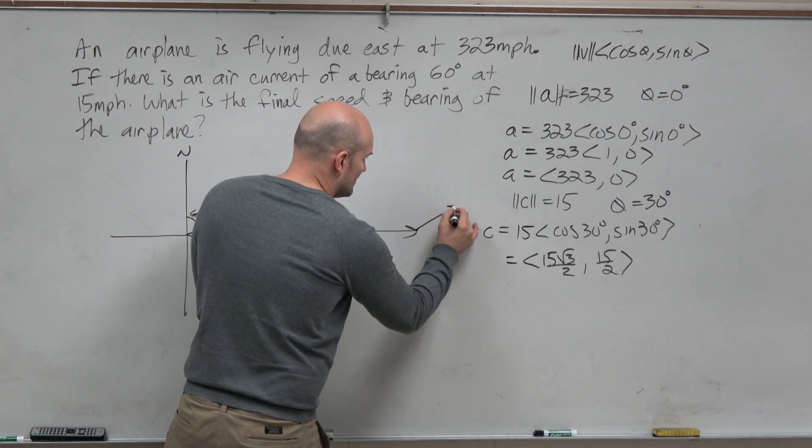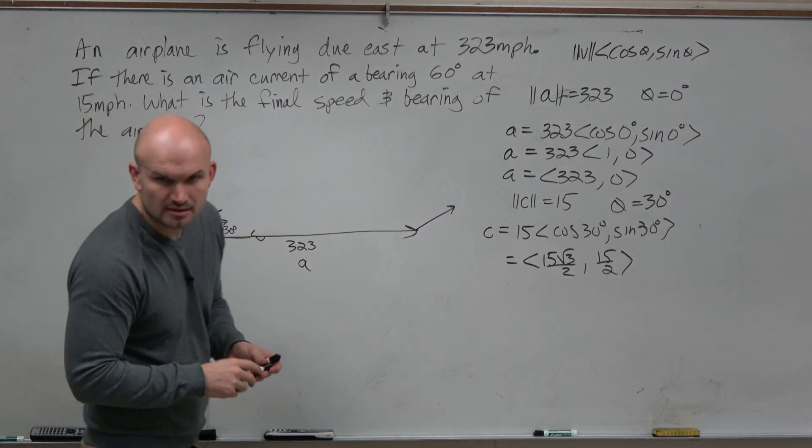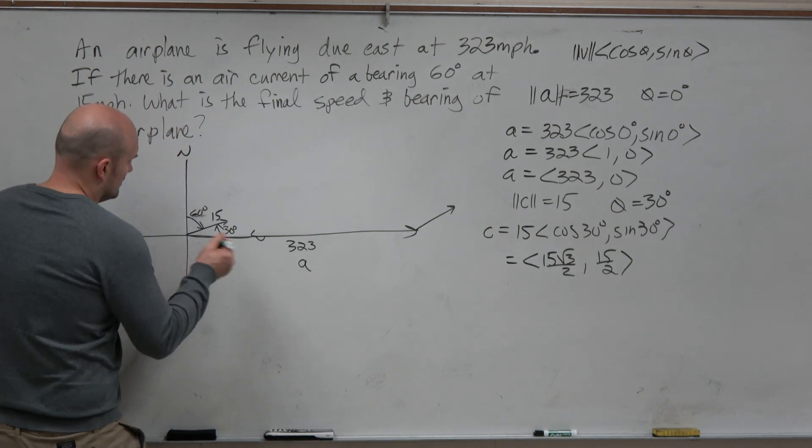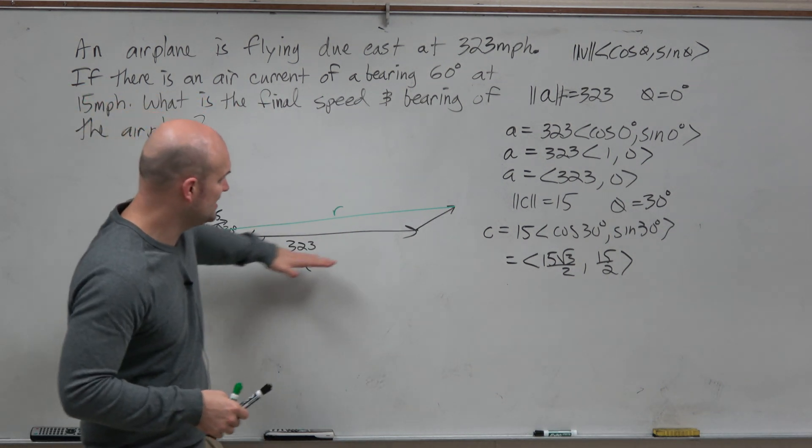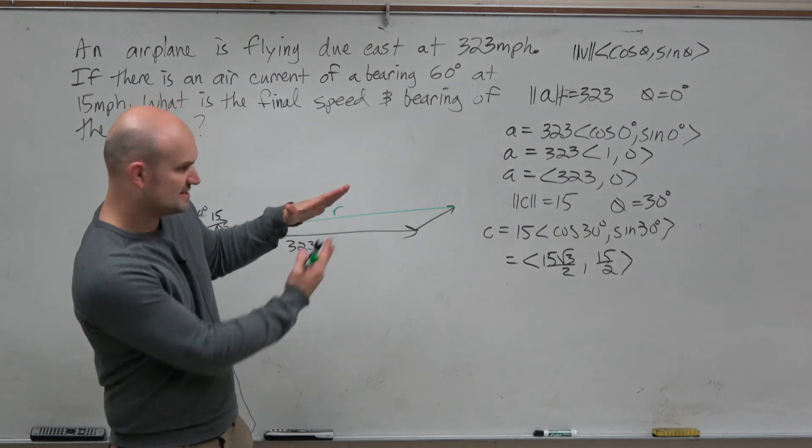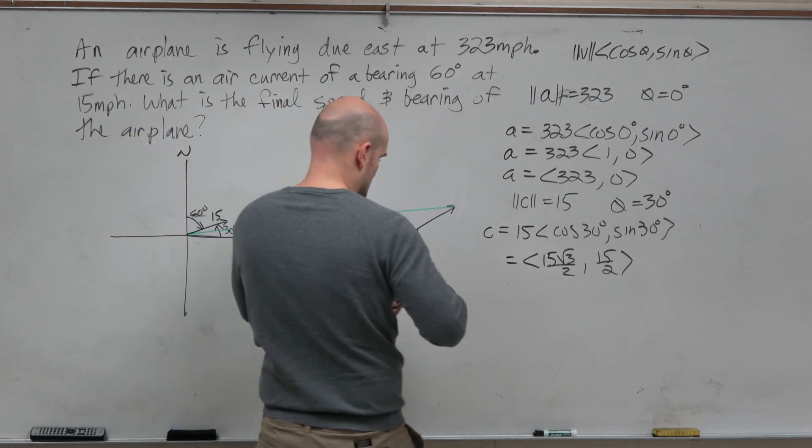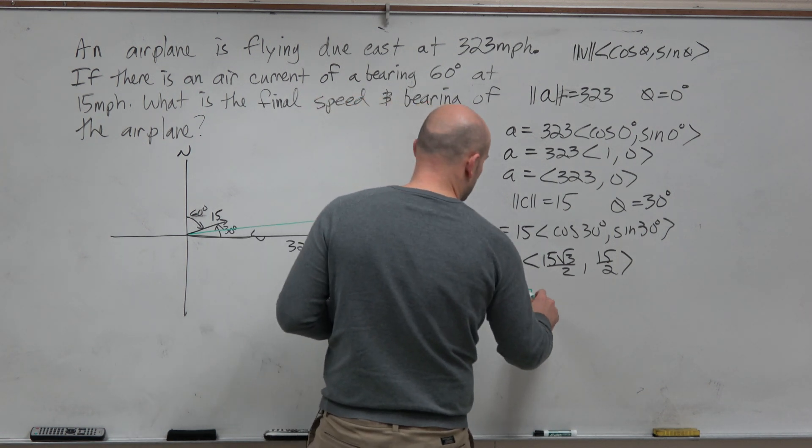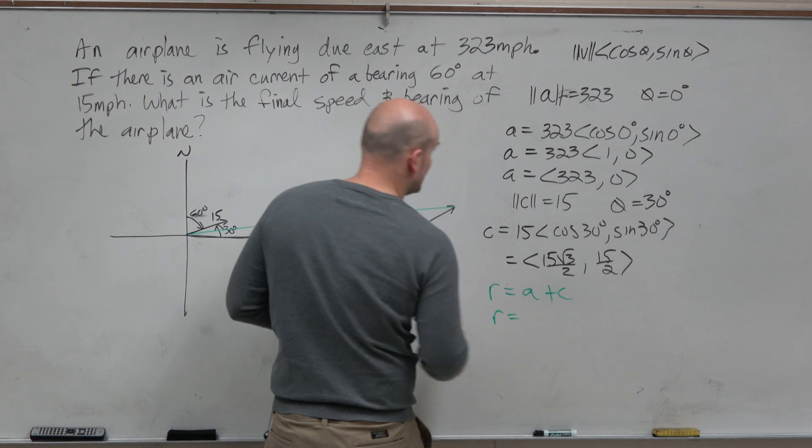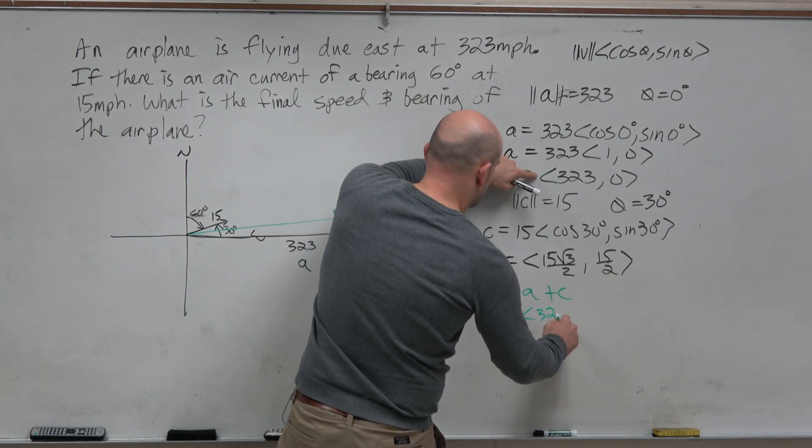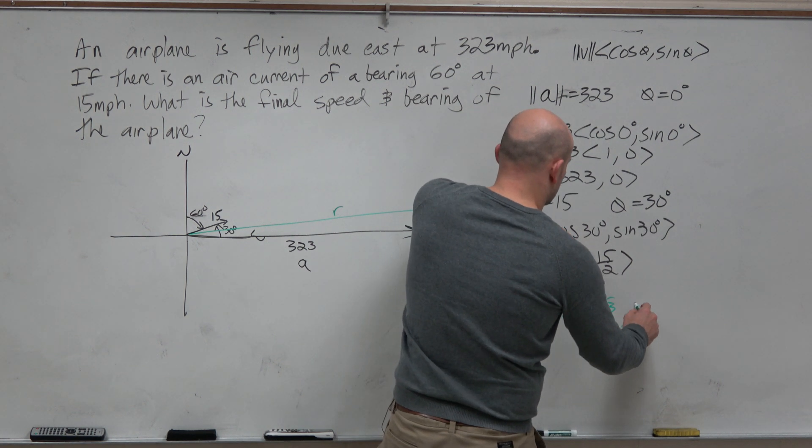We need to take this vector and add it to that vector. Remember the way that we add vectors? Tail to head. So if we took this vector and we added it to the end of the other vector, we would have what we call the resultant vector. Does it make sense that the resultant vector is going to have a little bit faster speed than the original speed and a little bit off course because it's getting pushed? Now we just got to figure out what is the resultant vector. The resultant vector is going to be A plus C. So R equals 323 plus 15 square root of 3 over 2, comma 0 plus 15 halves, which is going to be 15 halves.